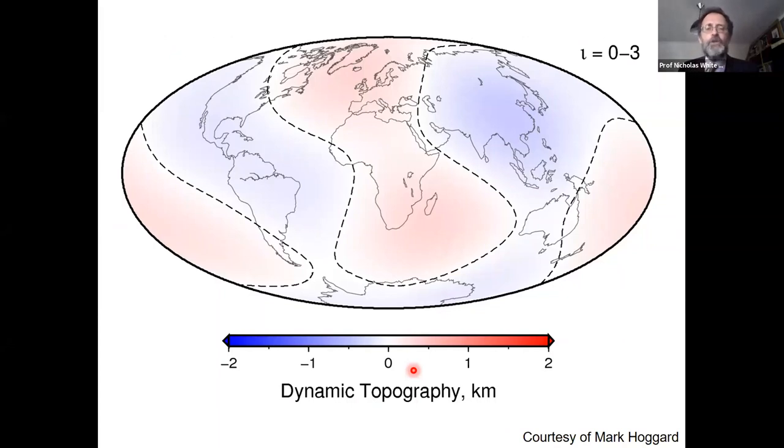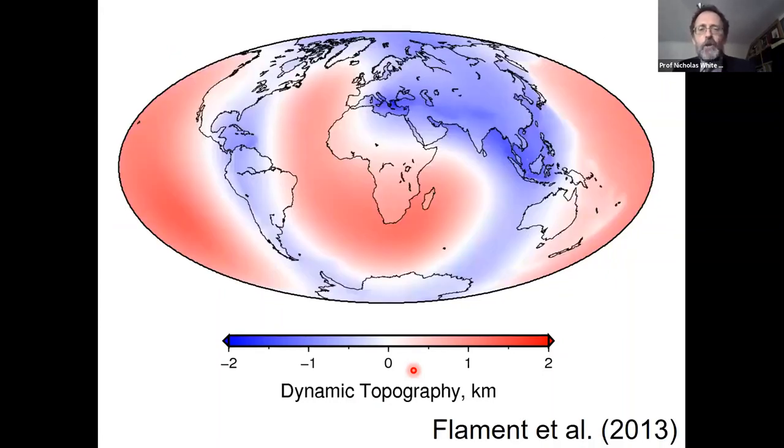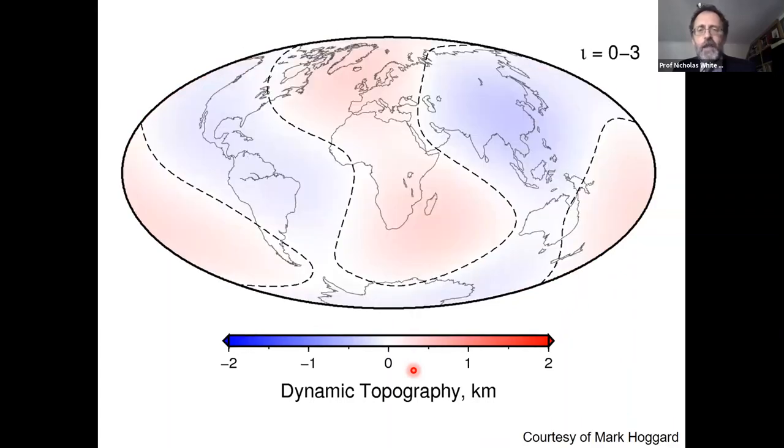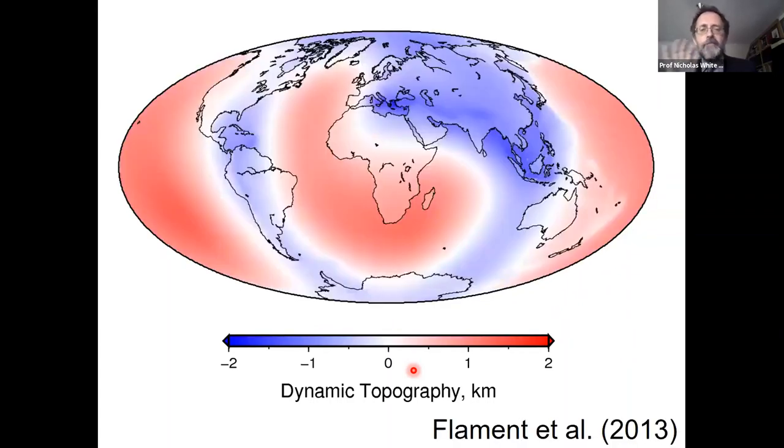If you filter that map and look at the longest wavelength component, spherical harmonic degree 2, corresponding to wavelengths of 10,000 kilometers, you see a lazy pattern. You're looking at an amplitude of dynamic topography at these longest wavelengths of ±100 meters.